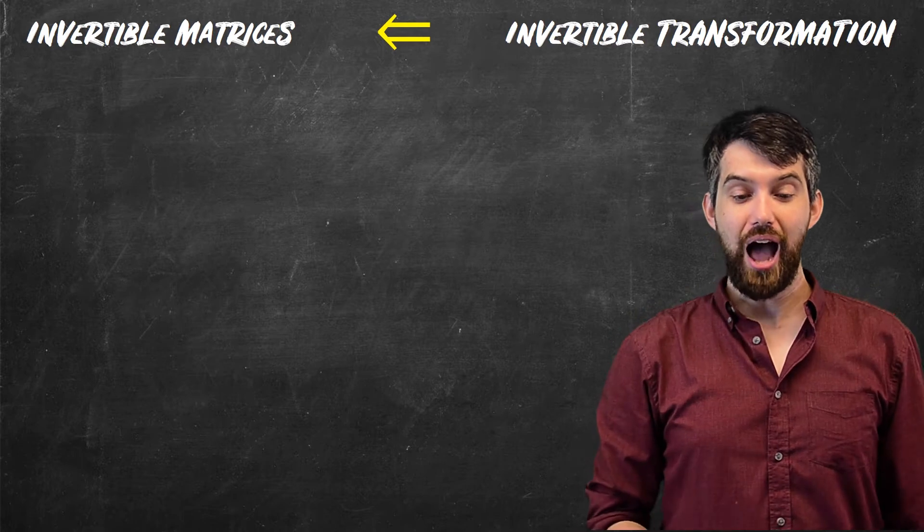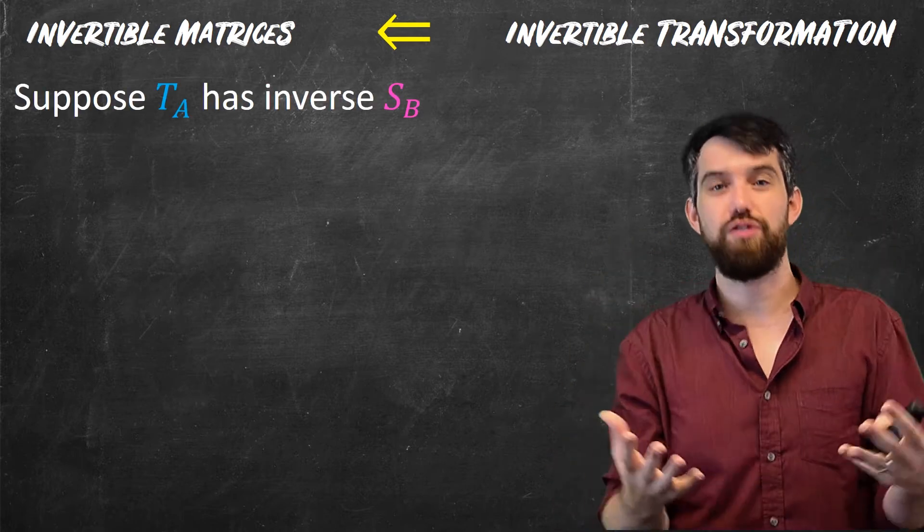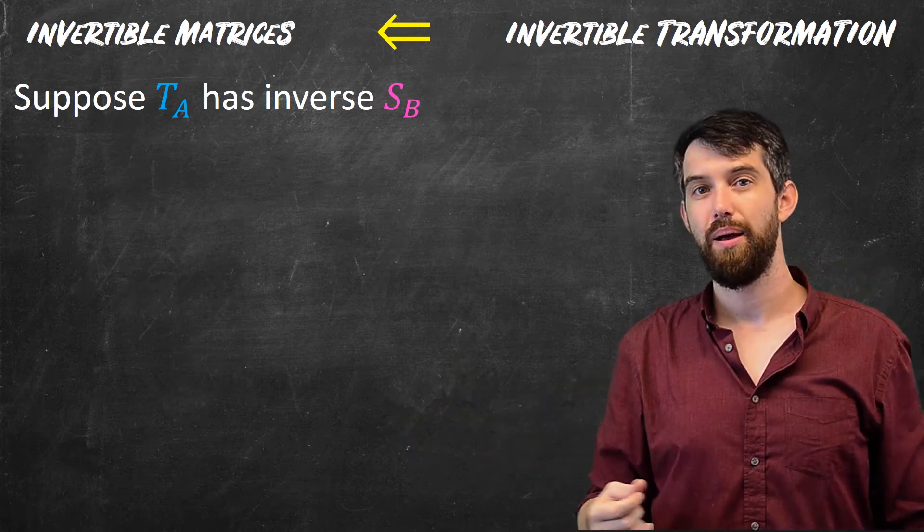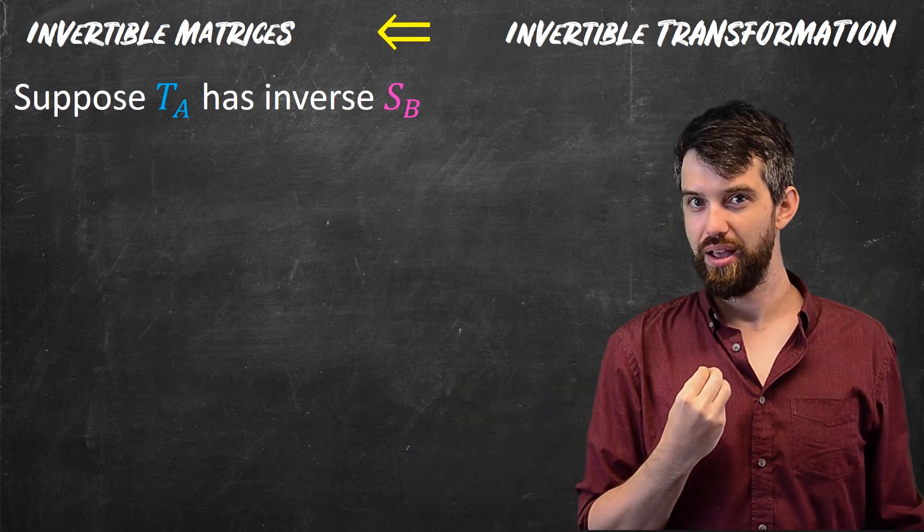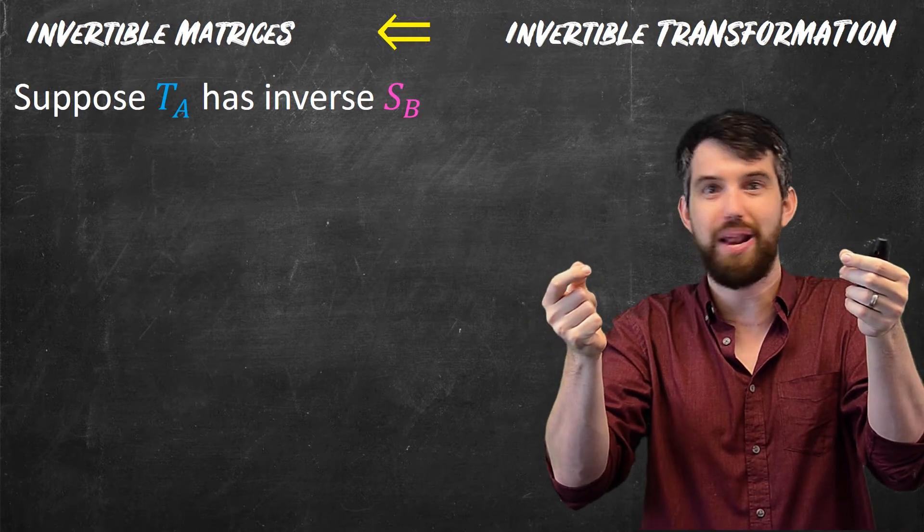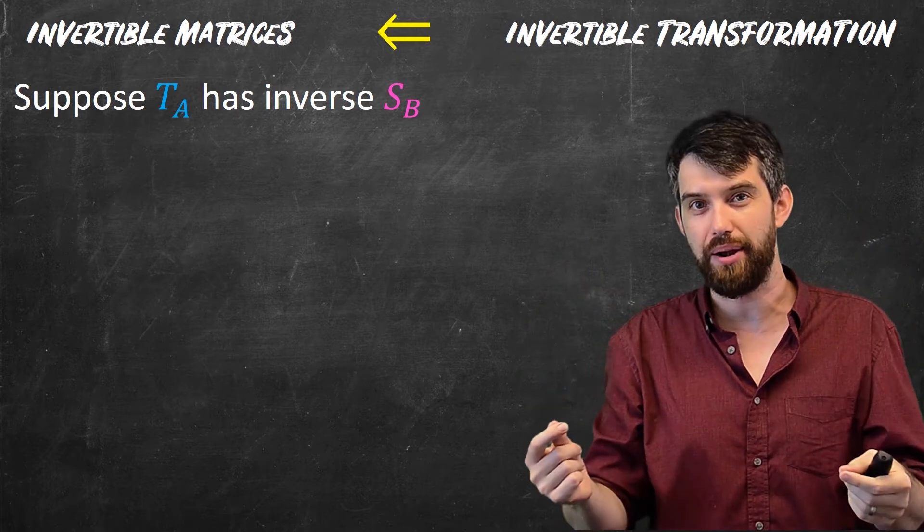So now what do I have? I've got that T_A, some transformation, has an inverse, which I will call S_B. But I don't know that the B is A inverse yet. I know that the T and the S, that those are going to be invertible transformations, but I don't know how the A and the B are related.